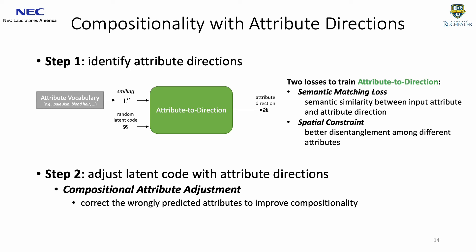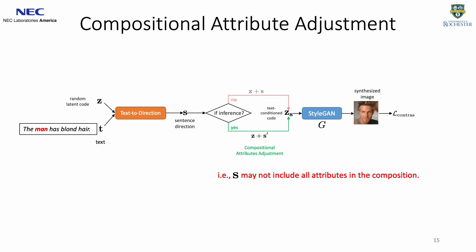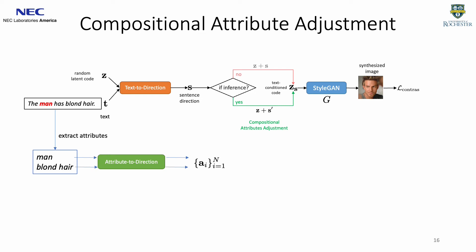In the second step, based on the identified attribute directions, we propose compositional attribute adjustment to further improve compositionality. Concretely, in the inference stage, the text-to-direction model predicts a sentence direction S to edit the random latent code Z. However, when the text contains underrepresented attribute compositions during the inference stage, the sentence direction S may not correctly include all of the attributes mentioned in the text. To this end, we first extract all attributes from the input text and send them to the trained attribute direction model to obtain a set of attribute directions. Based on these attribute directions, compositional attribute adjustment first identifies the wrongly predicted attributes based on the agreement between attribute direction and the sentence direction. Then it will add the wrongly predicted attribute directions to the sentence direction as a correction, resulting in an adjusted sentence direction S' for better compositionality.